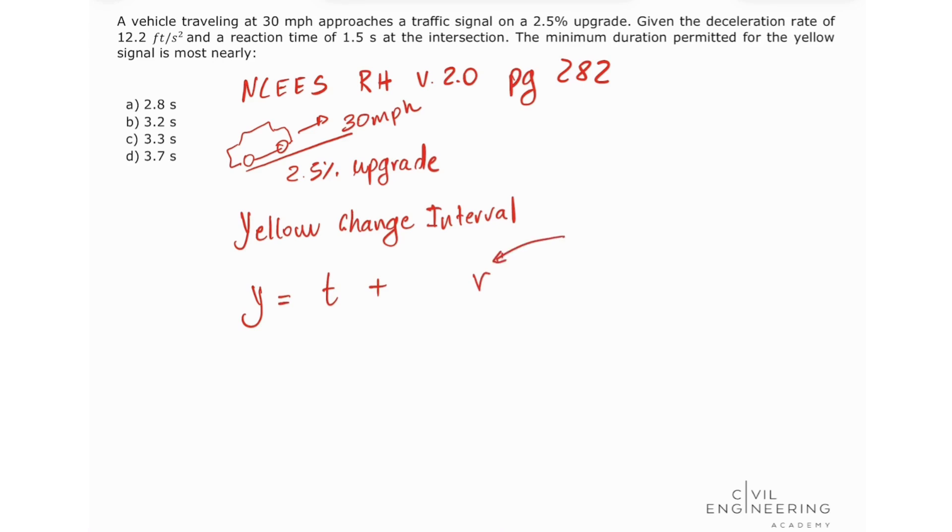This v is the approach speed in feet per second, divided by 2a, where a is the deceleration rate, plus 2 times g, which is our grade of approach, times the acceleration due to gravity.